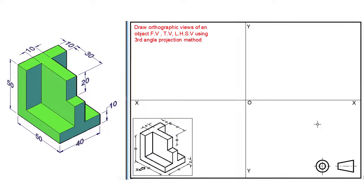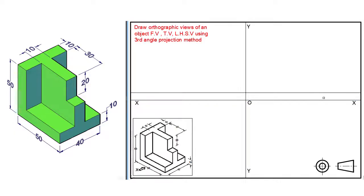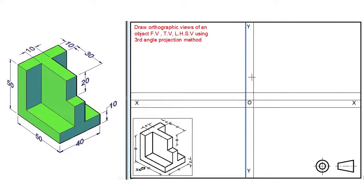With the help of a roller scale, draw a line parallel to line XX above and below at a distance of 10 millimeters. Similarly, draw a vertical line parallel to line YY ahead and behind at a distance of 10 millimeters. You can take any distance as per your requirement.